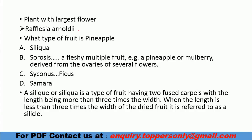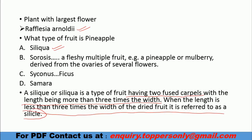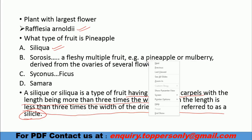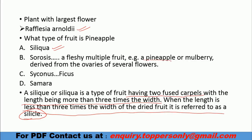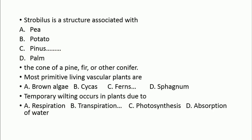The plant with the largest flower is Rafflesia. A siliqua type of fruit has two fused carpels with length more than three times the width. When the length is less than three times the width, it is called silicula. Pineapple and mulberry are multiple fruits. Ficus is a syconus. Strobilus is a structure associated with pinus — cones of pine, fir, or conifers are associated with strobilus. The most primitive living vascular plants are ferns, which belong to the pteridophyte group.